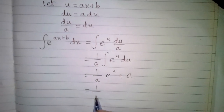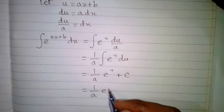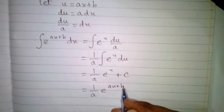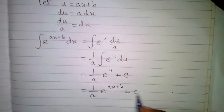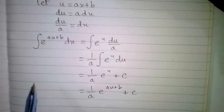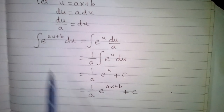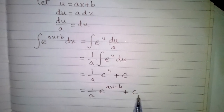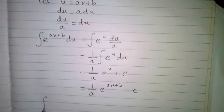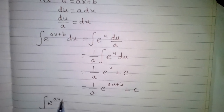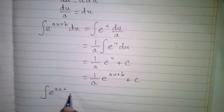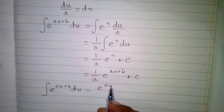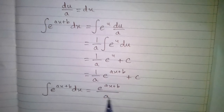Now substituting back, the integral of e to the power ax plus b is 1 upon a times e to the power ax plus b plus c, where c is the constant. We can also write this as e to the power ax plus b upon a plus c.